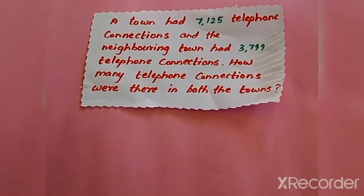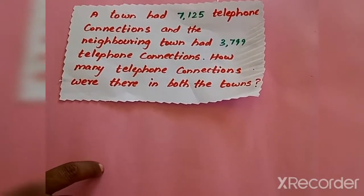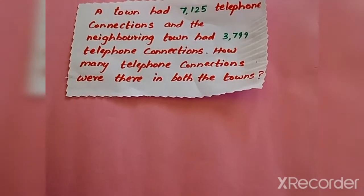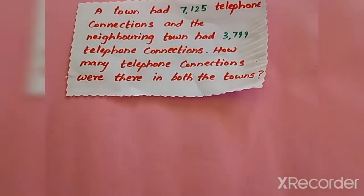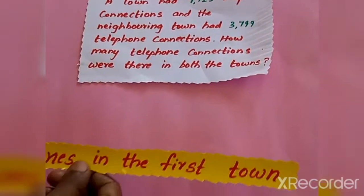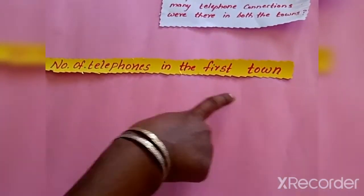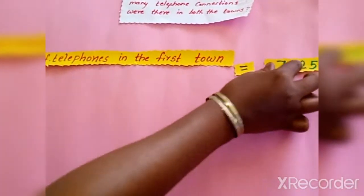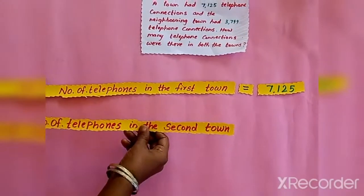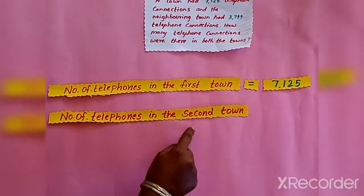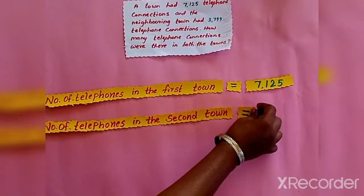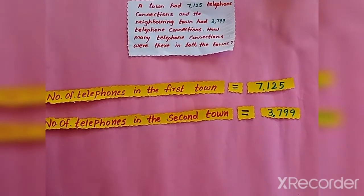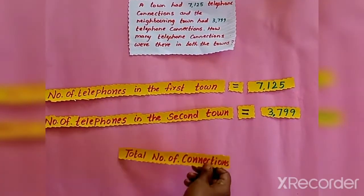You also have to write the statements for solving word problems. The first statement can be: the number of telephones in the first town equals 7125. The second statement can be: the number of telephones in the second town equals 3799. Now what we have to find is the total number of connections.